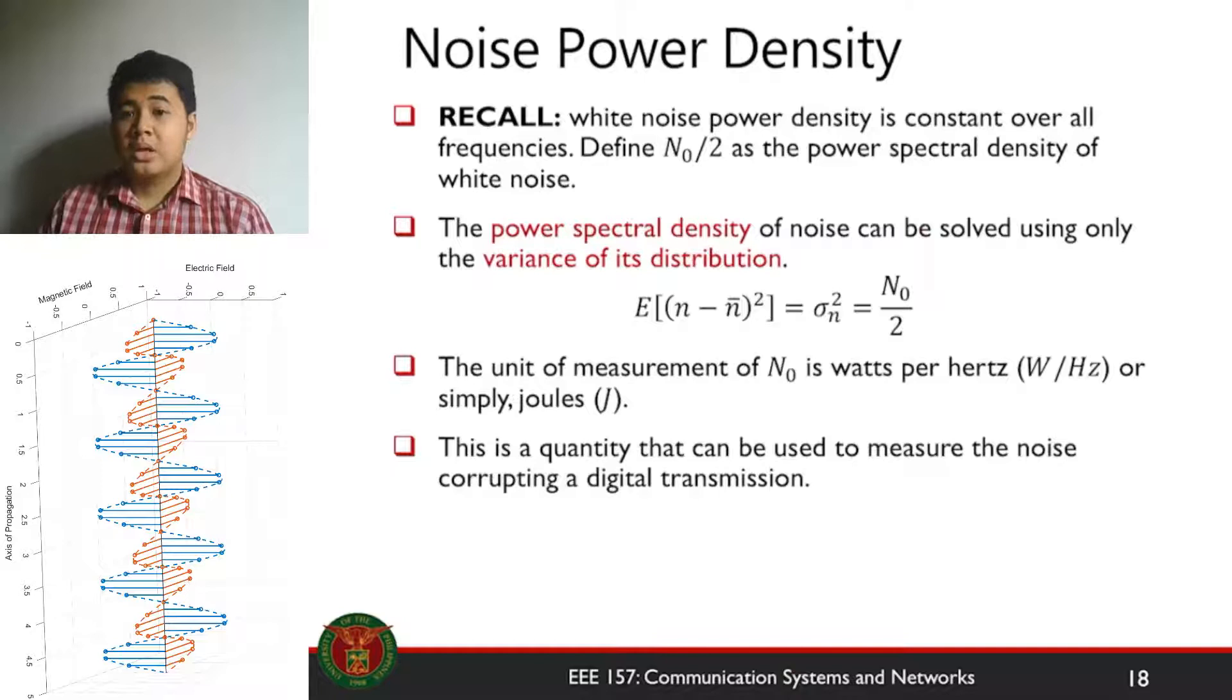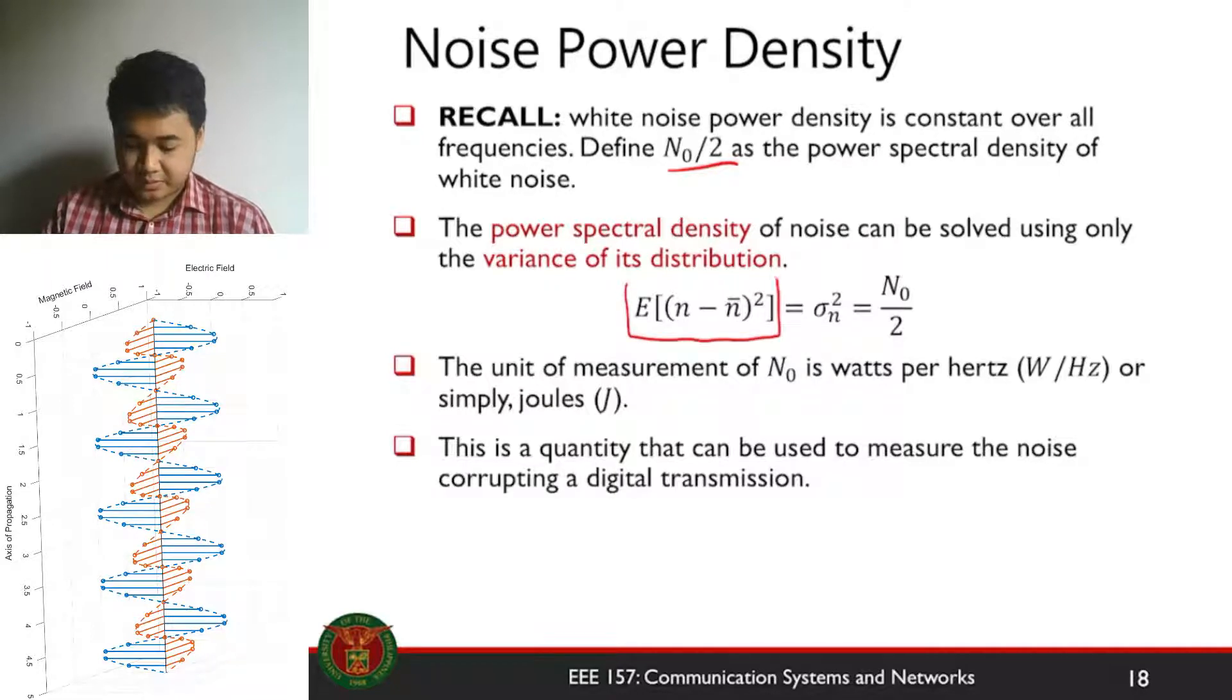So how do we then quantify the noise? Recall first that the white noise density is constant all over frequencies. So we define the quantity N0 over 2 as the power spectral density of white noise. The power spectral density of this distribution can be taken from the variance.